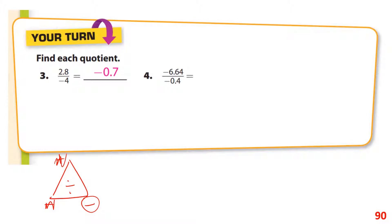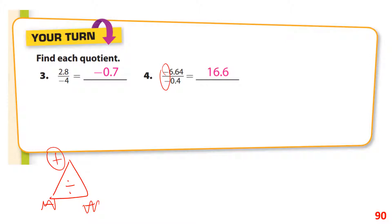The next one: we have a negative divided by a negative, so the answer is positive. 6.64 divided by 0.4 is 16.6, so the answer is positive 16.6. And for the third problem, the answer is going to be negative. 5.5 divided by 0.5 is 11, so we have negative 11.